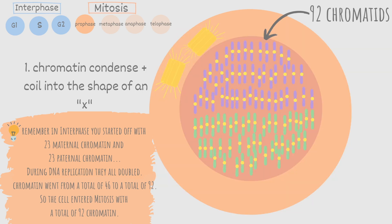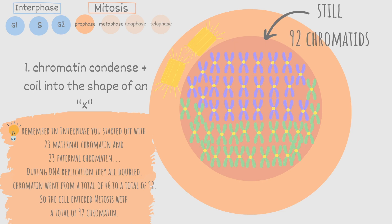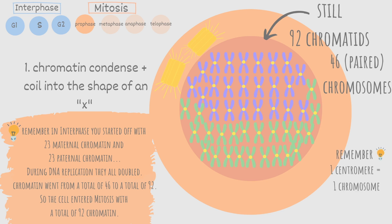Okay so going back to the cell in the prophase remember the 92 chromatids are now condensed and eventually will take the shape of an X. We still have 92 chromatids however they are paired up and now make up 46 paired chromosomes. Remember we count the number of chromosomes by counting the number of centromeres. So here we have 46 centromeres so we have 46 chromosomes.